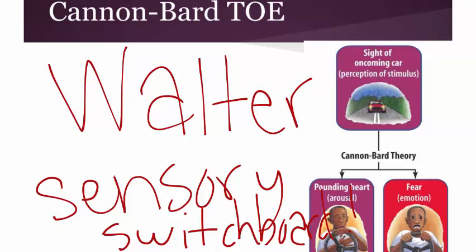The Cannon-Bard theory says there is a simultaneous occurrence of physiological arousal and emotional experience. With the stimulus of an oncoming car, at the exact same moment your body reacts with a pounding heart and increased blood pressure, you also experience the emotion of fear. Both things happen at the same time. A memory trick: 'cannon' sounds a bit like 'concurrent' — things happening simultaneously, pounding heart and the emotional experience of fear occurring together.